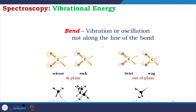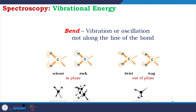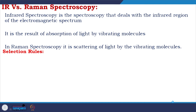Bending vibrations include in-plane scissoring and rocking, and out-of-plane twisting and wagging. Both IR and Raman operate on the vibrational level, making comparison extremely important. IR spectroscopy deals with absorption of light by vibrating molecules; in Raman spectroscopy it is scattering of light by the vibrating molecules — both arise as an outcome of the effect of molecular vibrations.